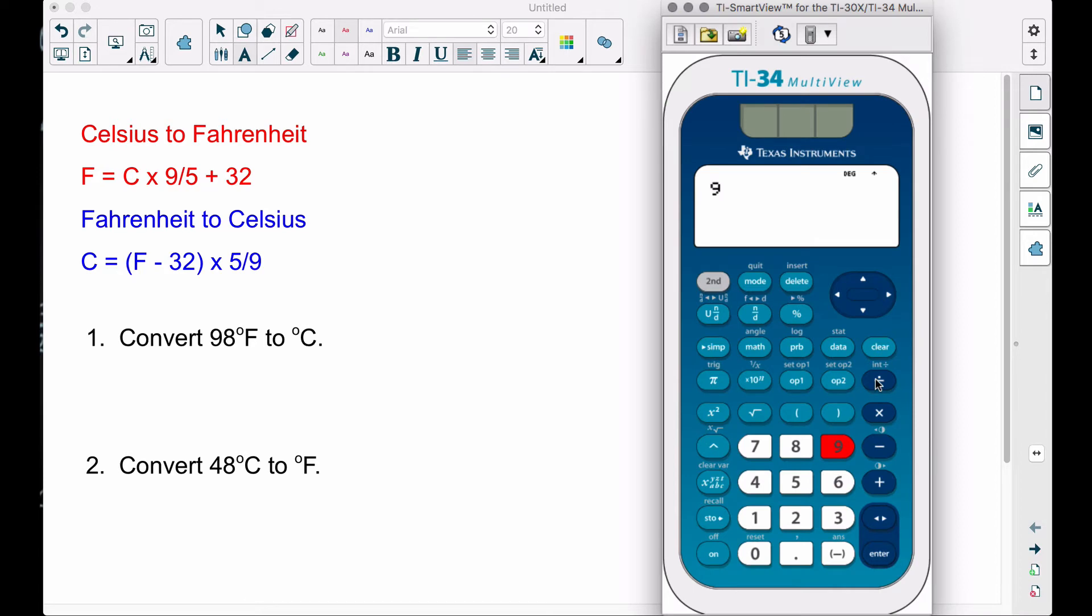Now recall, 9/5 equals 1.8, so you could use 1.8 there. And the 5/9, I don't recommend using a decimal because it's a repeating decimal. But let's go ahead and work these two examples out.